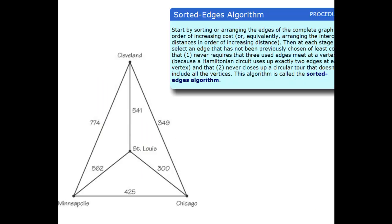So with our first example, again, we've got the Cleveland, Minneapolis, St. Louis, and Chicago. The most time-consuming part of this algorithm is actually sorting the edges. So I'm going to take the 300. That's the lowest. 349. Then 425. Then 541. 562. And 774.